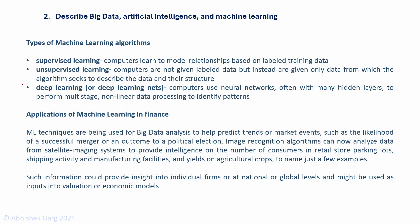There are three types of machine learning algorithms. First, supervised learning: the algorithm has labeled training data and learns to model relationships based on that labeled data. Second, unsupervised learning: the algorithm is given data without labels, from which it seeks to describe the data and their structure. Third, deep learning: computers use neural networks with many hidden layers to perform multi-stage, non-linear data processing to identify patterns.